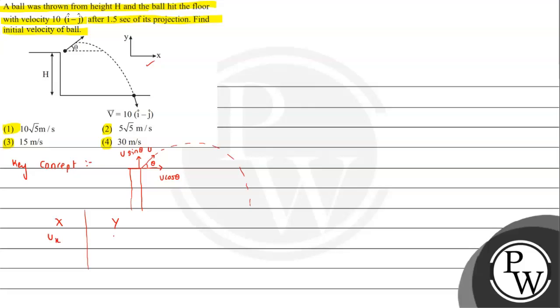Along horizontal direction, velocity is ux. Along vertical direction, velocity is uy. ux and uy are nothing but u cos theta and u sin theta. Along X, we can see there is no acceleration along X.